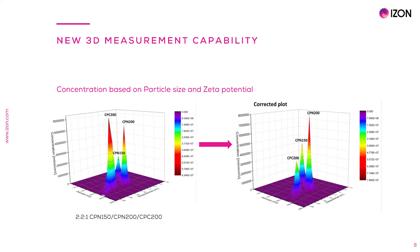For example, here is a 3D plot of a trimodal 2-to-2-to-1 CPN-150, CPN-200 and CPC-200 mix, where before data analysis correction, the charged carboxylated polystyrene CPC-200 particles are vastly overrepresented.